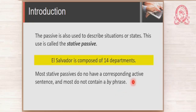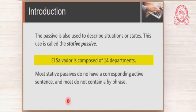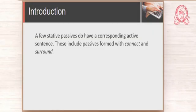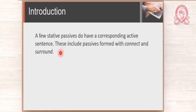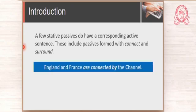Remember that sometimes we like to convert between active and passive. When you have a stative passive, you don't have a corresponding active sentence — we're talking about most stative passives — and therefore generally you don't have a 'by' phrase. However, a few stative passives do have a corresponding active sentence. The ones that do are formed with the verbs 'connect' and 'surround.' So when you have those verbs, sometimes you have the corresponding active voice.